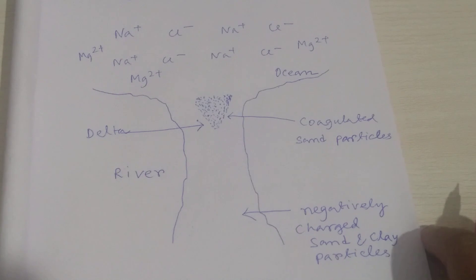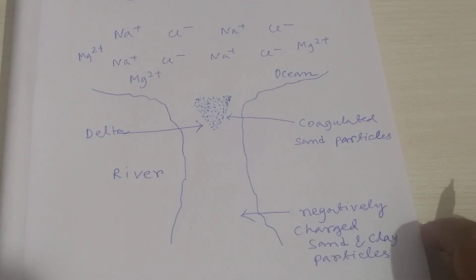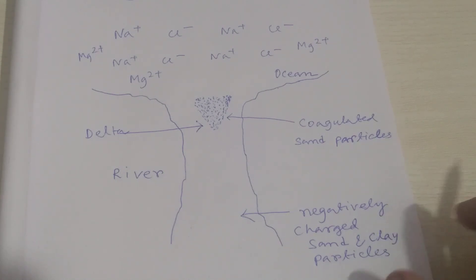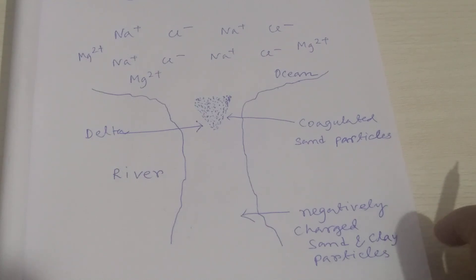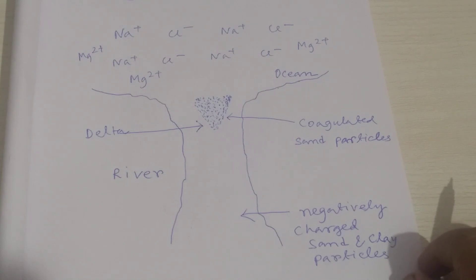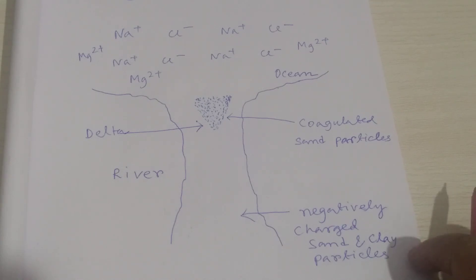This is the discussion about why, or the reason behind, the delta formation at the joining point of the river and sea or ocean. That's it — that's the discussion about this topic. I think you understand the answer to this question. If you have any other question, you can ask me in the comment section below. Thank you for watching this video.